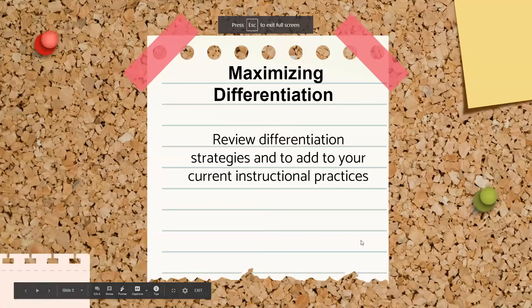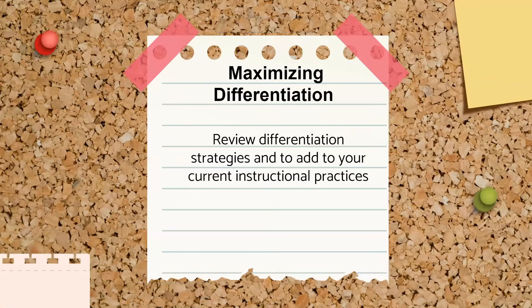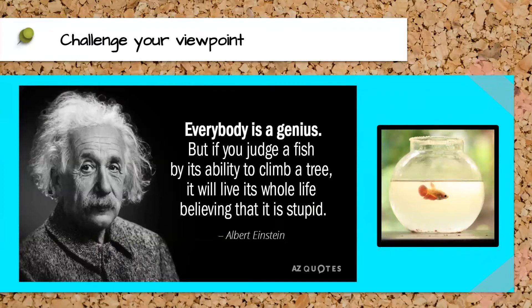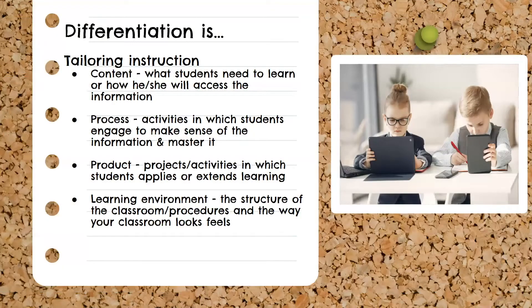In maximizing differentiation, we're going to review differentiation strategies and add to your current instructional practices. To get started, we'll look at a quote from Albert Einstein: 'Everybody is a genius, but if you judge a fish by its ability to climb a tree, it will live its whole life believing that it's stupid.' Our job when we differentiate is to allow students to have success and reach the level they're at, and the way we do that starts with assessment. Let's first review what differentiation is.